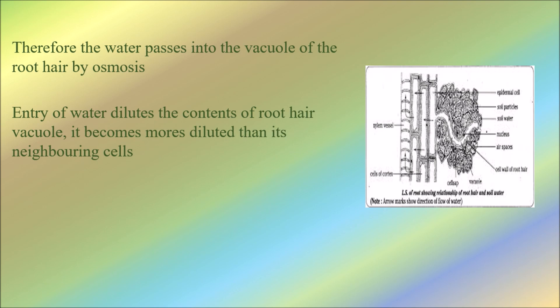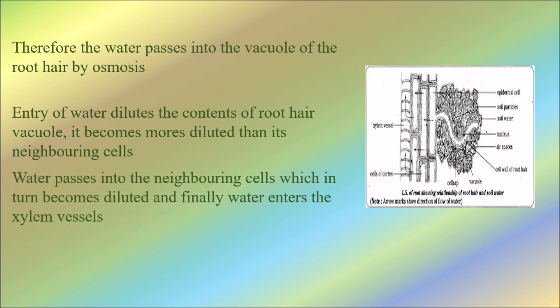The root hair vacuole becomes more diluted than its neighboring cells. Water then passes into the neighboring cells, which in turn become diluted. The water absorbed from the soil through osmosis is passed from one cell to another in this way.